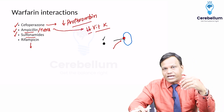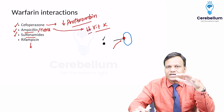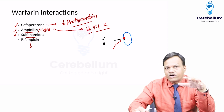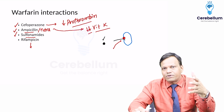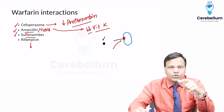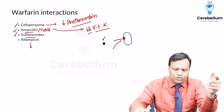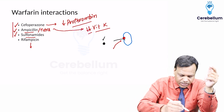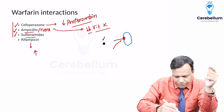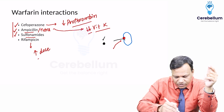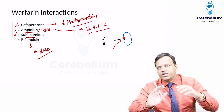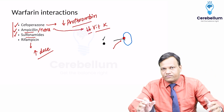Rifampicin is a strong enzyme inducer — it increases the metabolism of warfarin, making it ineffective. So with the first three drugs we need to decrease the warfarin dose, but with rifampicin we need to increase the dose of warfarin because it renders warfarin ineffective.